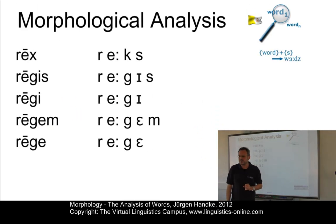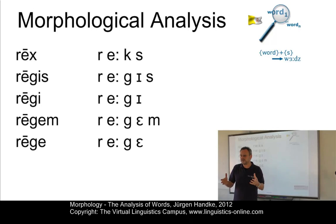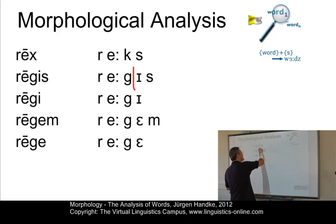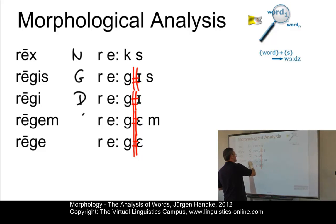Let's now look at a different language: Latin. In Latin we have inflectional paradigms. Here we have the noun denoting the word 'king', and again the analysis must be based on phonemes rather than orthography. Inserting morph boundaries, we have: reg-, regi-, regem, rege. This paradigm covers the nominative, genitive, dative, accusative, and instrumental cases.